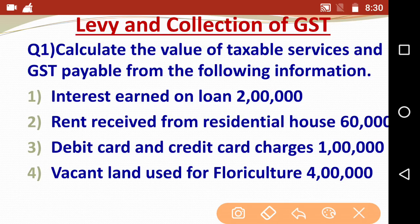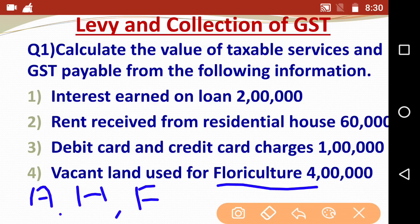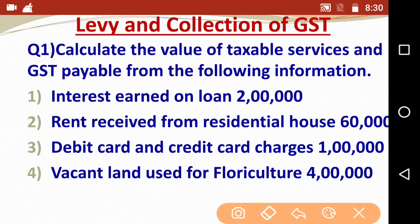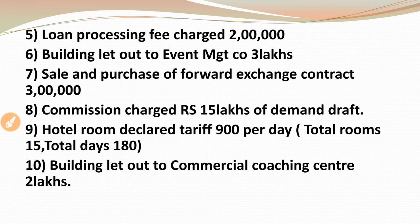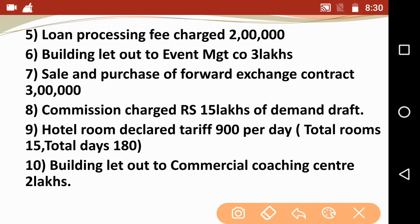Then vacant land used for horticulture - there are three words to remember: A for animal husbandry, H for horticulture, and F for floriculture - AHF. This point is not taxable. Next, loan processing fees - as I discussed, loan processing fees are taxable, but interest earned on that loan is non-taxable.